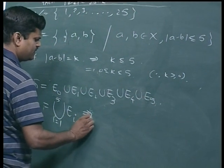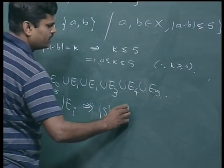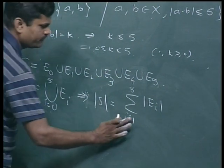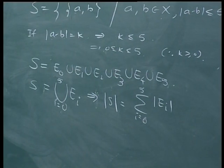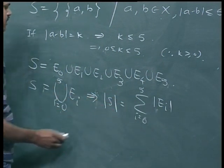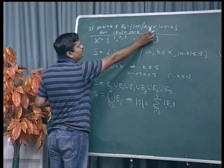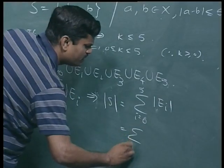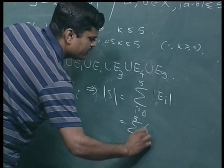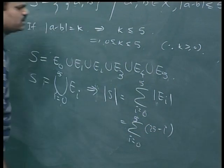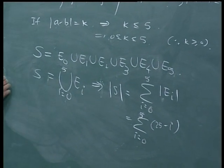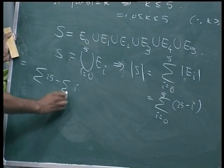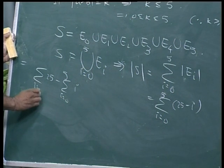So mod of S equals the sum of mod of E_i for i from 0 to 5, and since these sets are disjoint, we have mod of S equal to sigma from i equals 0 to 5 of (25 minus i). Using the formula for mod of E_i equals 25 minus i, this becomes sigma(25) minus sigma(i) for i from 0 to 5.